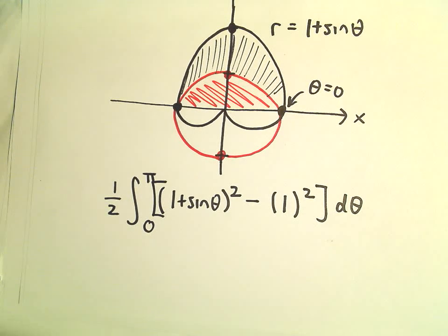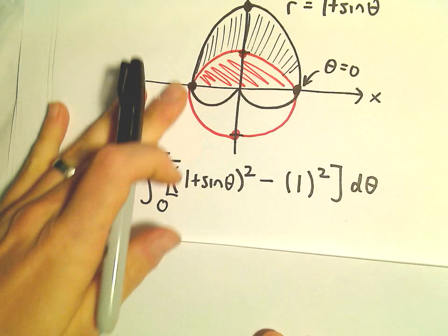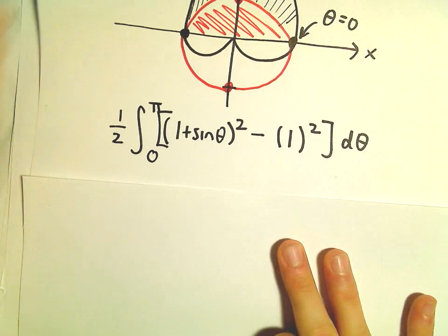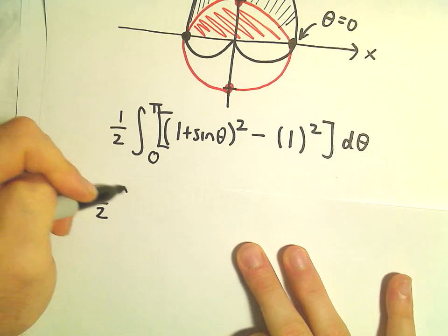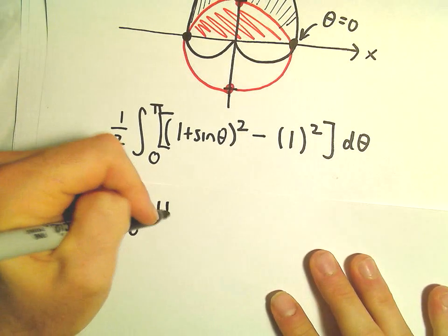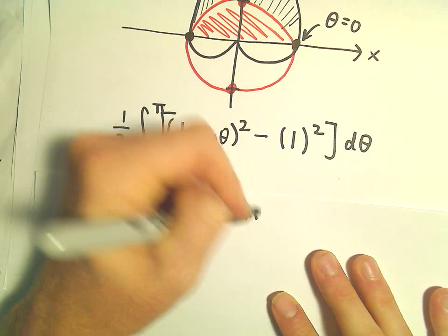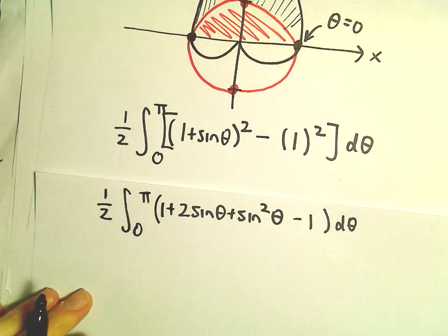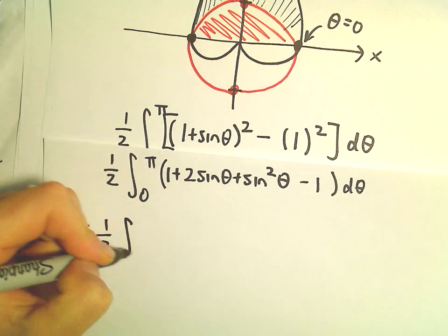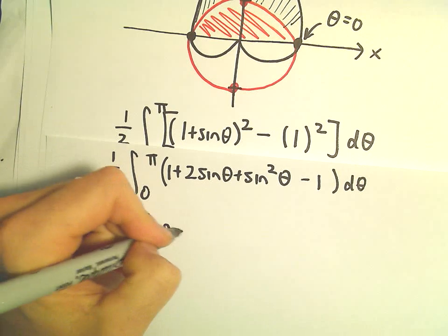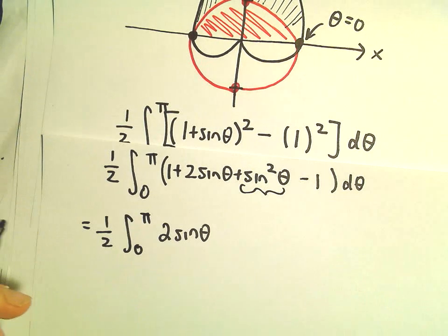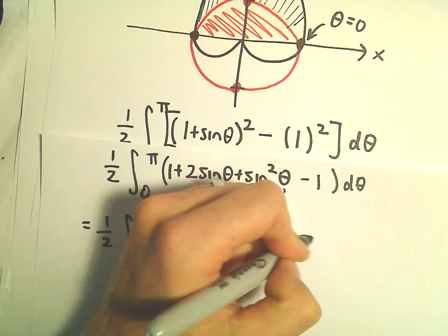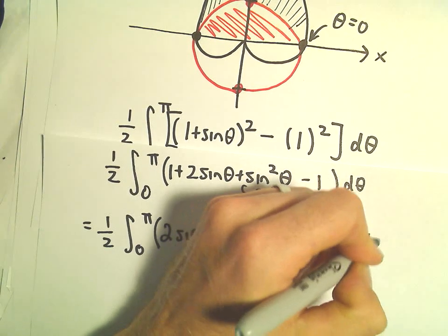Alright, so now we've got the integral set up to compute the area. So to do this, it's just going to be a little bit of multiplying things out. That's going to be 1 half 0 to pi. When we distribute all this out, we would have 1 plus 2 sine theta plus sine squared theta. But then we have our minus 1 left over. I guess we can simplify this a little bit more. The 1's will cancel. We'll be left with 2 sine theta plus sine squared theta. But on sine squared theta, we have to use our identity. So we have to use 1 half times 1 minus cosine of 2 theta d theta.